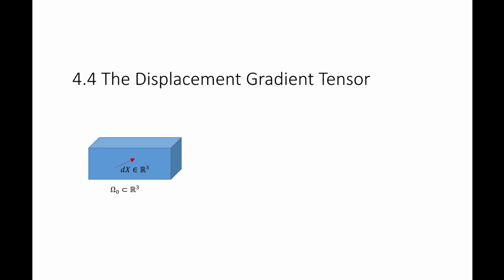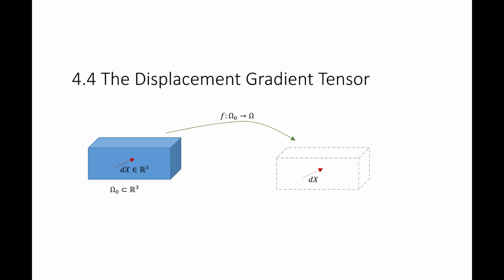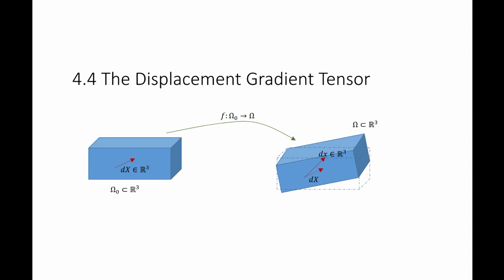The next measure of deformation is called the displacement gradient tensor, which tells us about the strain in an object as it deforms. If I have an object represented in R3 by the set omega naught, with a tangent vector dX in the reference configuration, and a function that maps the reference configuration into the deformed configuration, then in the deformed configuration vector dX becomes vector dx. As shown previously, the new vector dx is equal to the deformation gradient F multiplied by the old vector dX.